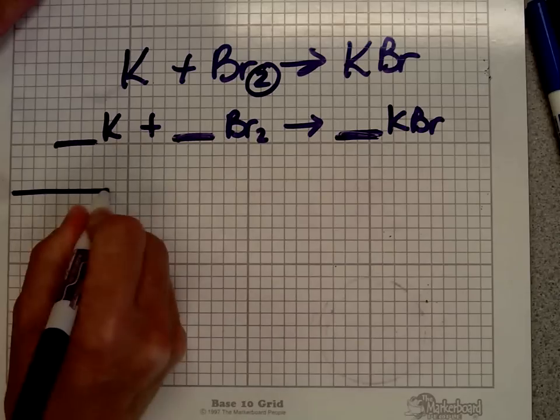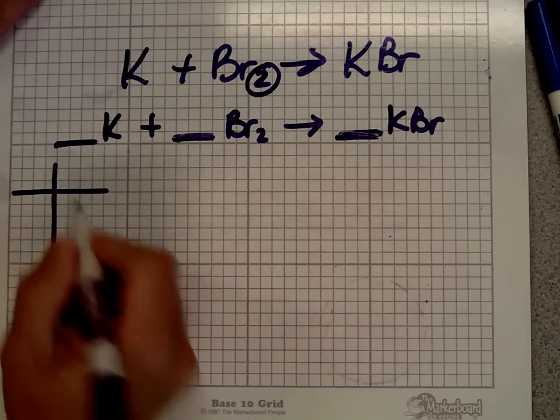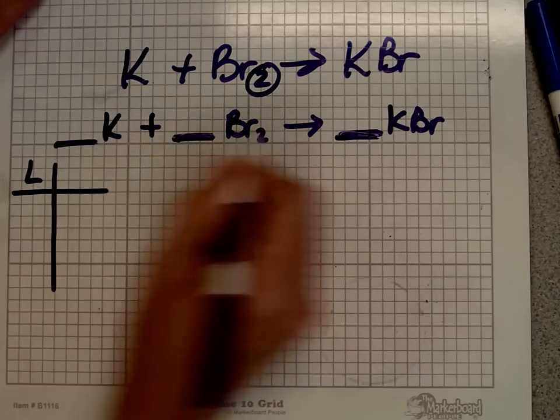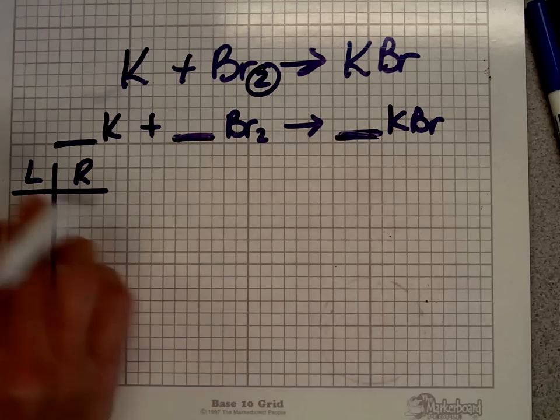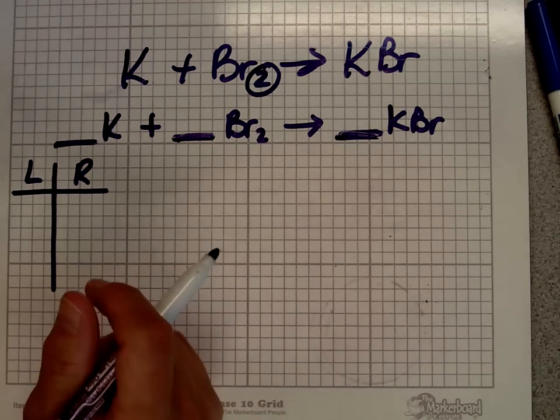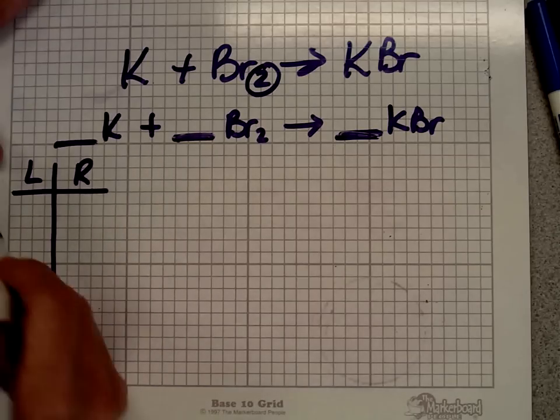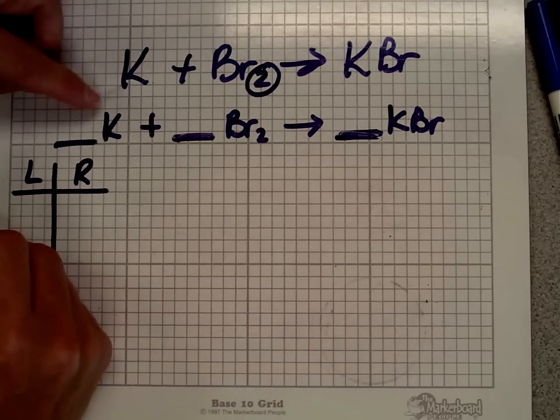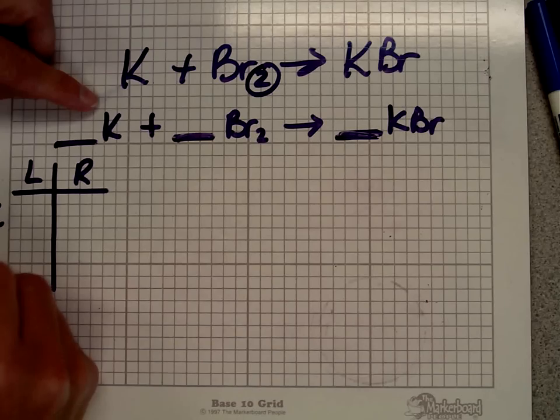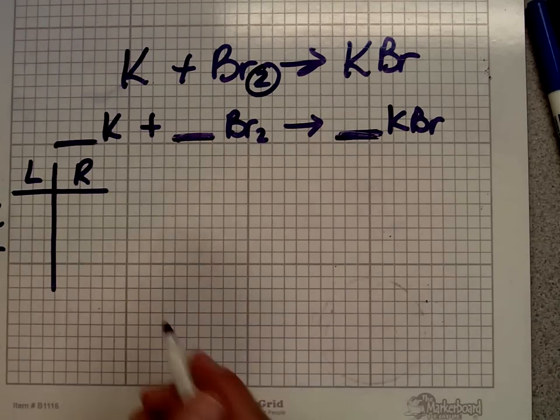So the way I balance chemical equations is I make myself a little t-chart. I ask what's on the left side of the arrow and what's on the right side of the arrow. You can list this as products and reactants if you want. I choose left and right just because it helps me keep it straight in my little brain. And then I write what elements or compounds I have. I have potassium and I have bromine. And that's all I have in this equation.